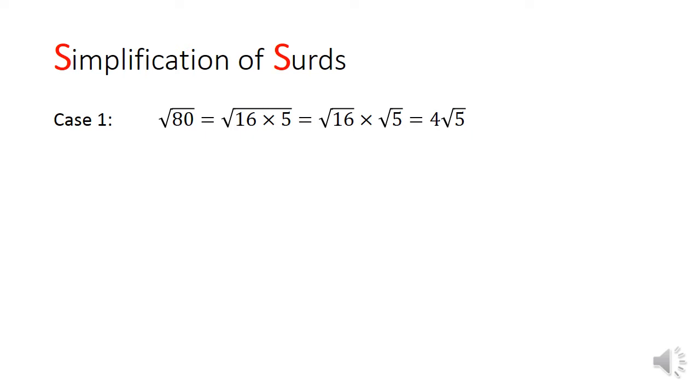Where the laws come in more useful are in the simplification of surds. Take case 1, where we see root of 80. We should try to simplify it so as to make problems easier. This is done by breaking 80 up, looking particularly for factors that are square numbers. In this case, 80 is equal to 16 times 5. So root 80 is equal to root 16 times root of 5, giving us 4 root 5.